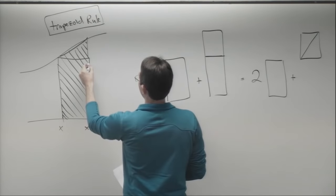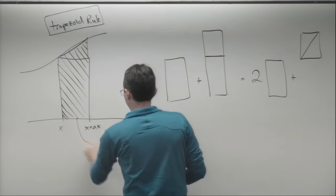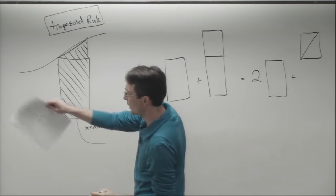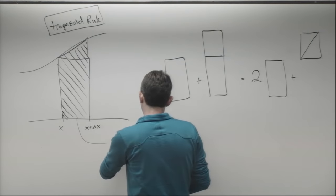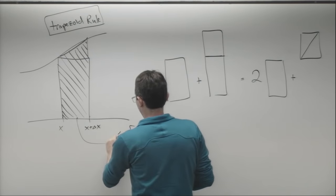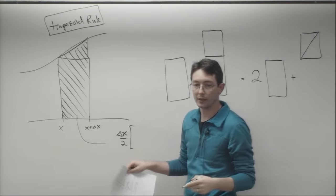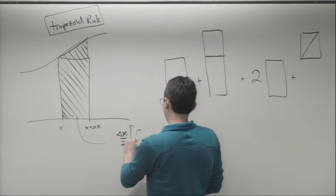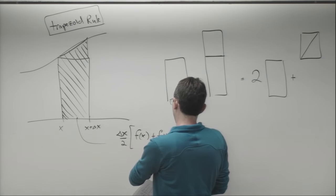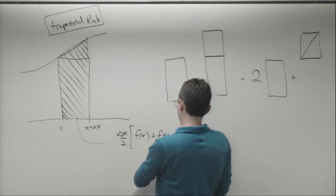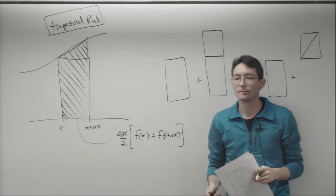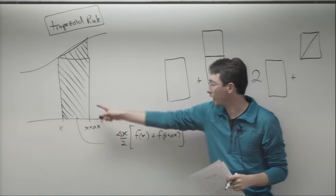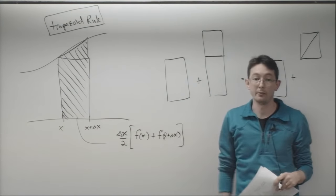The formula for this is really simple. The trapezoidal area is delta x over 2 times f of x plus f of x plus delta x. That's it — that's my new area for trapezoidal integration, and it's much more accurate.